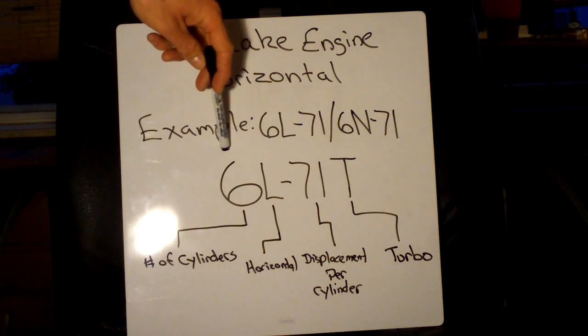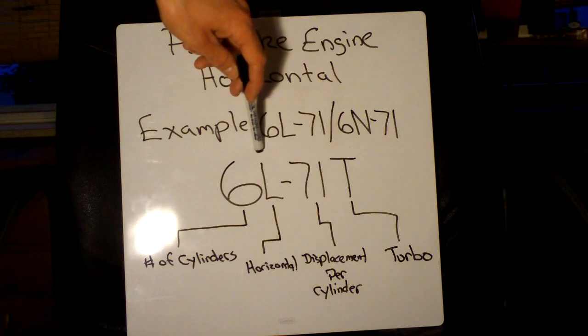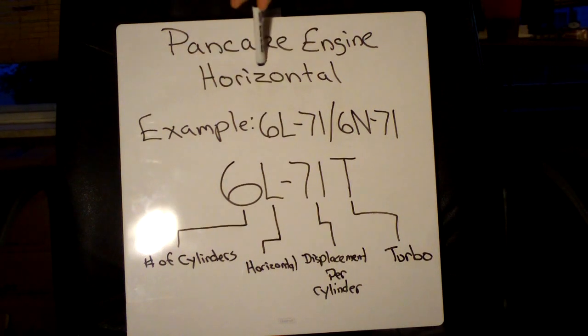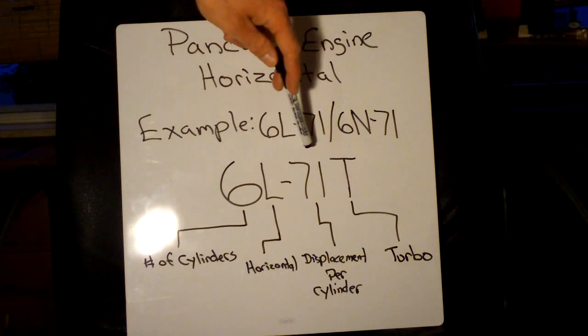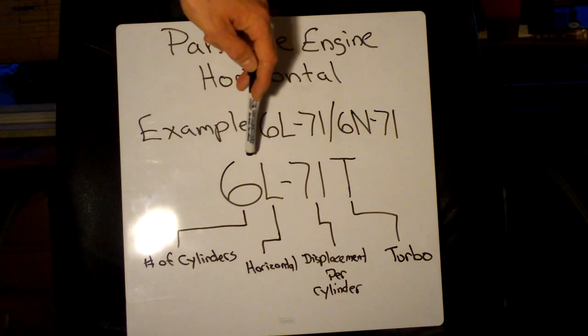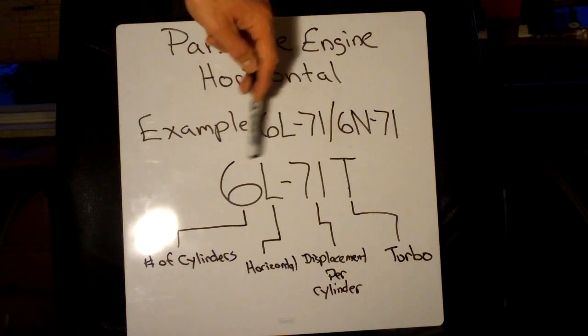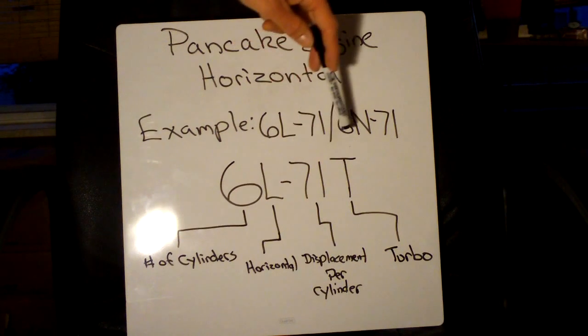First number is going to be the number of cylinders. Second letter here, whether it's an L or an N, is going to dictate the horizontal engines. Then you're going to have your dash. Then you're going to have your 71 or 92. Most of these are going to be the 6L or 6N71, and that's your displacement per cylinder just like all the other ones.